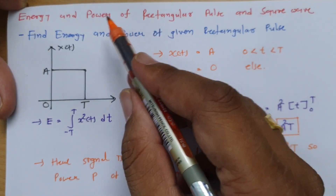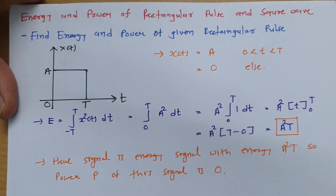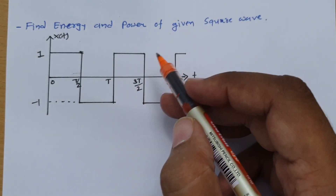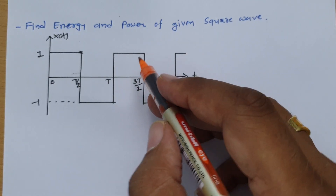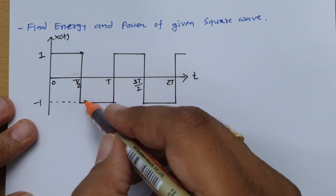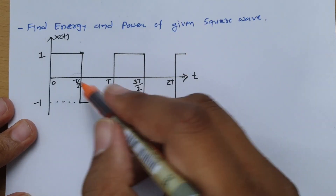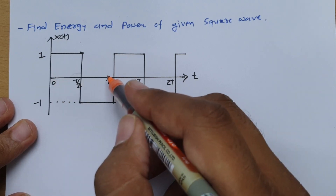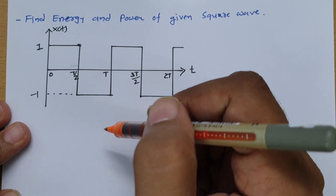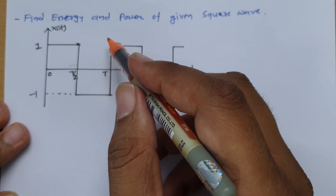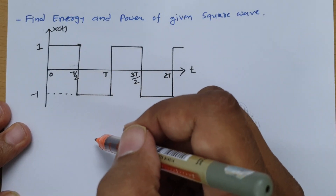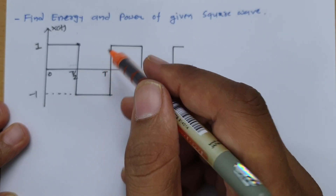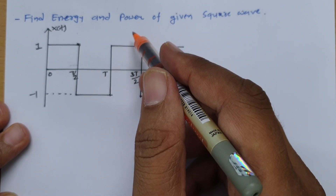Now we will calculate energy and power of a square wave. One can see the square wave here. Since the square wave is a periodic signal — it repeats after time period T — for a periodic signal, we should first calculate power, because periodic signals are power signals and their energy will be infinite.